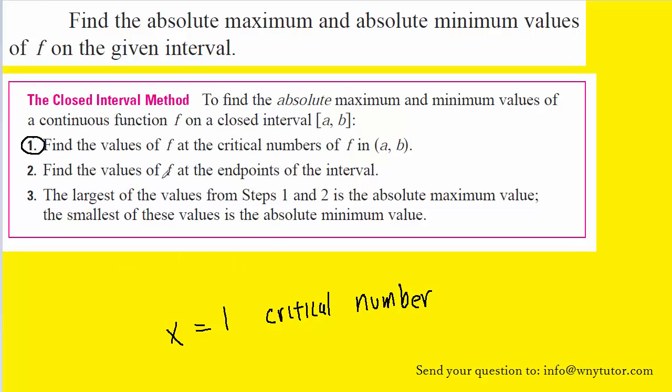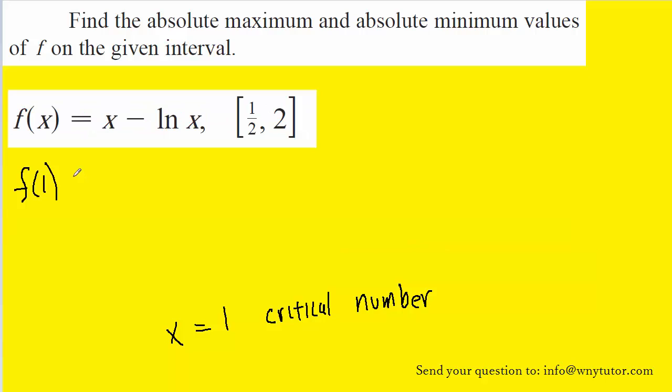Referring back to step 1, it's not enough just to find the critical number, but we actually have to find the value of the function at that critical number. So in other words, we have to calculate f of 1. And that's as easy as plugging 1 into the function. And so we have 1 minus the natural log of 1. The natural log of 1 is 0, and so we obtain 1 as our result. We want to hang on to that, maybe put that off on the side. We'll write down that f of 1 is equal to 1.